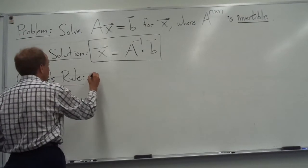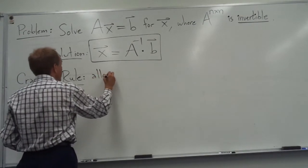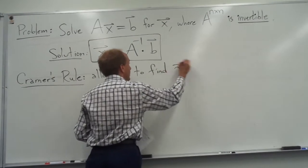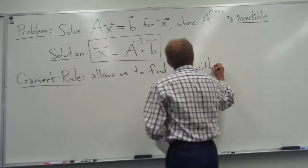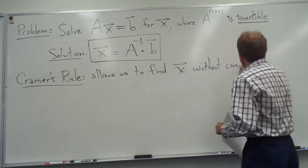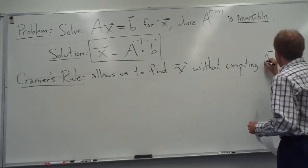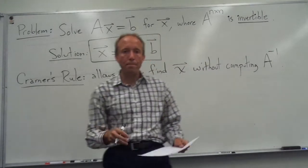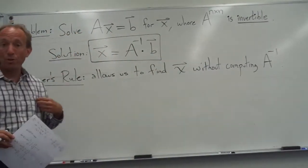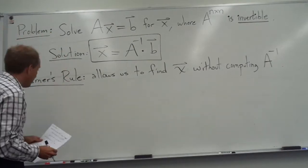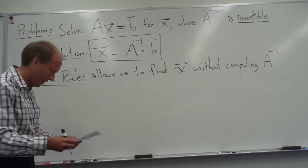Okay, so Kramer's Rule allows us to find X without computing the inverse of the matrix. So this is kind of cool. We're going to use determinants instead. So here's basically, I'm going to give you the answer, and then we'll just try an example.